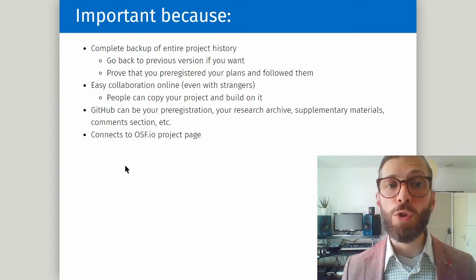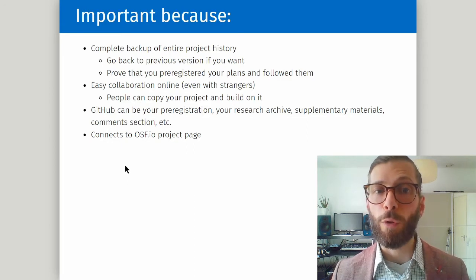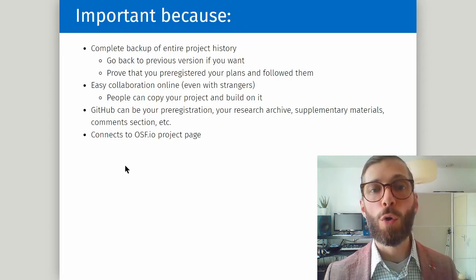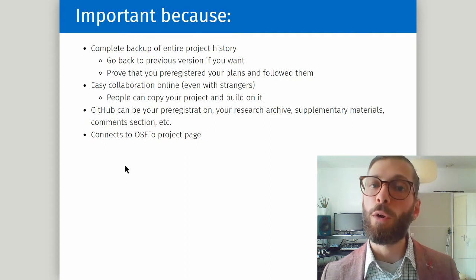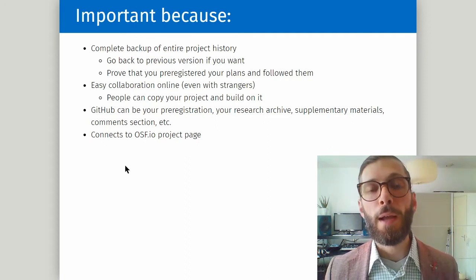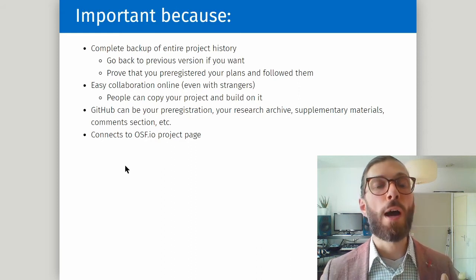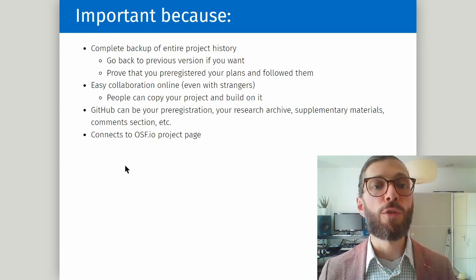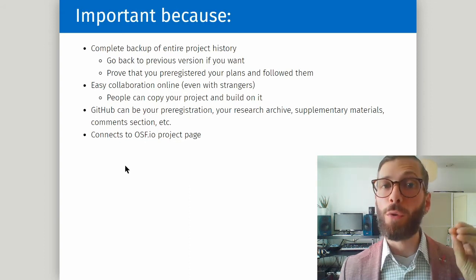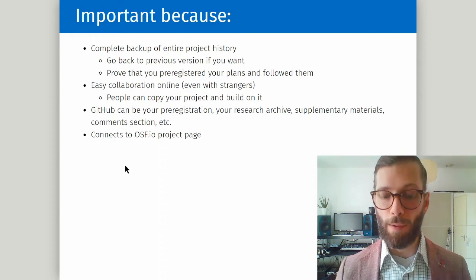Git and GitHub also enable easy collaboration online. Even with strangers, people can send you comments about your code or your paper, or copy your entire project and build future research upon it. In other words, GitHub can be your pre-registration, your research archive, your supplementary materials, comment sections, and more. You can also connect GitHub to an Open Science Framework project page.